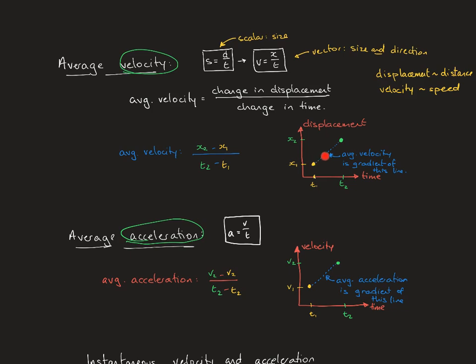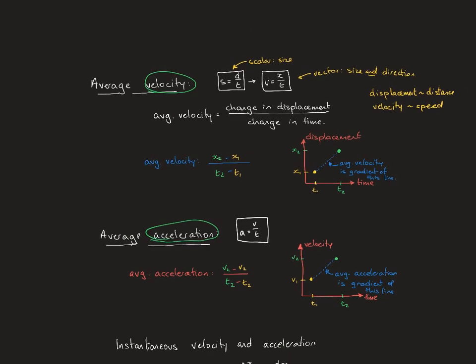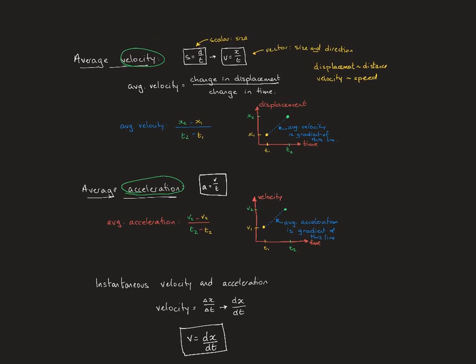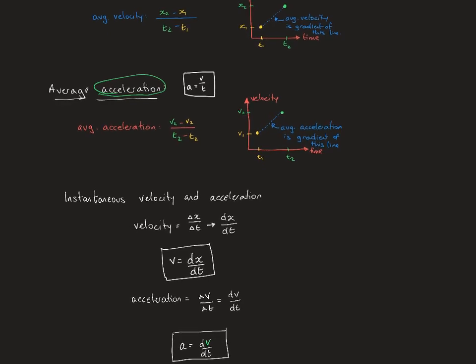Velocity is the gradient of the displacement-time graph, and acceleration is the gradient of the velocity-time graph. Taking this idea to the limit gives us instantaneous velocity and instantaneous acceleration. Velocity is dx/dt — the derivative of displacement. Acceleration is dv/dt — the derivative of velocity.